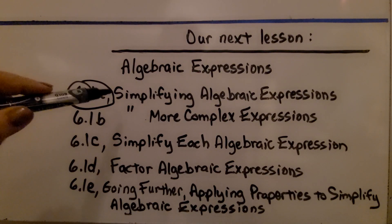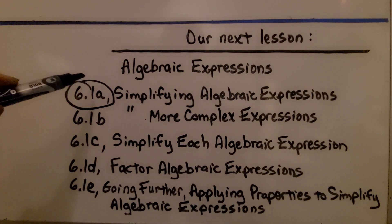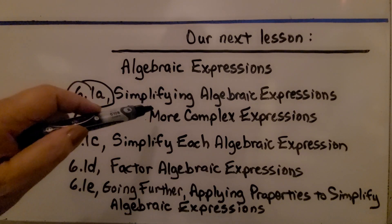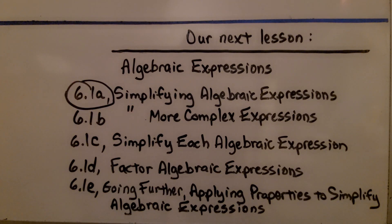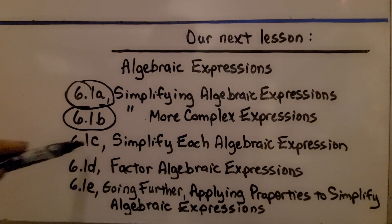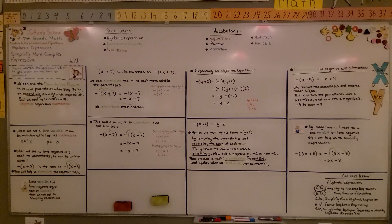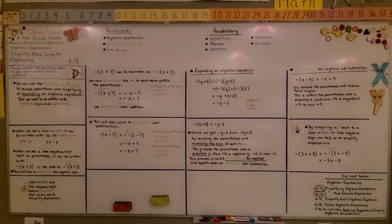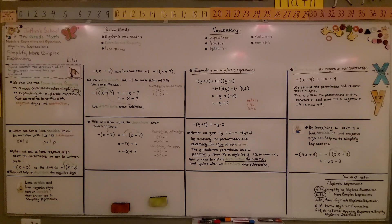I really thought I could fit all of this into one video, but it would have ended up being 17 or 18 minutes, so I added this more complex expression simplifying as its own video. Now we're going to move on to 6.1c simplifying each algebraic expression. I really try my best not to make the videos too long — stick with me, we'll move on to the next part of 6.1.